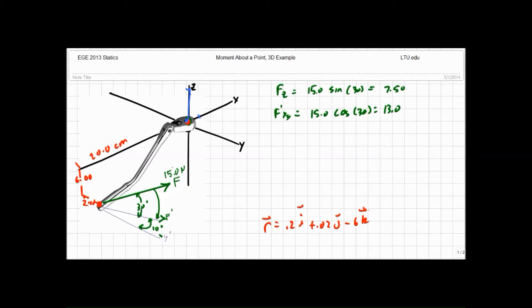So we can calculate those directly. F along the x axis, and it's going in the negative x direction, so I'm going to say it's negative 13.0 times the sine of 10